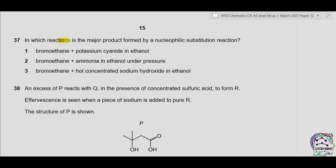Question 37. In which reactions is the major product formed by a nucleophilic substitution reaction? Reaction 1: bromoethane plus potassium cyanide. KCN provides the cyanide nucleophile which attacks the partial positive carbon and Br is eliminated. This is nucleophilic substitution. The product is CH₃CH₂CN plus KBr. Reaction 1 is correct.